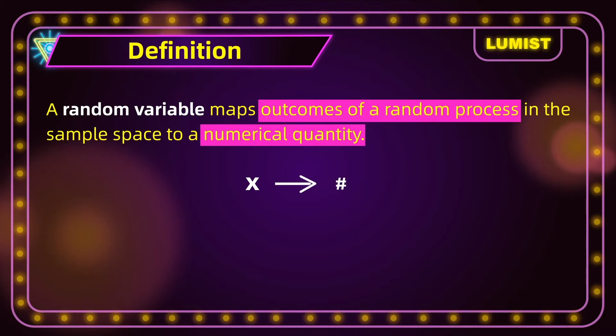Let me show you this again using a more detailed representation. Say we have a random variable y. The random variable can be y or x or z or w or whatever you want it to be. That doesn't matter as long as you're consistent.